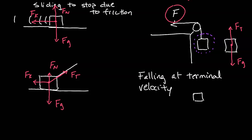Next we have an object falling at terminal velocity. As usual we start with Fg. Falling at terminal velocity means it's falling at constant speed — the acceleration is zero — which means the forces have to be balanced. So I need another force, and that other force in this situation is going to be F_drag, or air drag, sometimes referred to as air resistance.